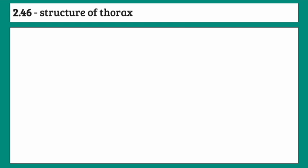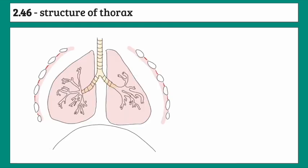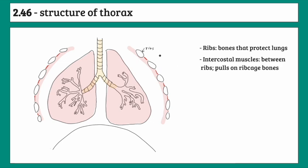So, specification point 2.46 covers the structure of the thorax. Here is a breathing system diagram. The aspects you have to know include the ribs — a bone structure whose role is to protect the lungs. In between the ribs, we've got intercostal muscles. There are two kinds: external intercostal muscles and internal intercostal muscles.